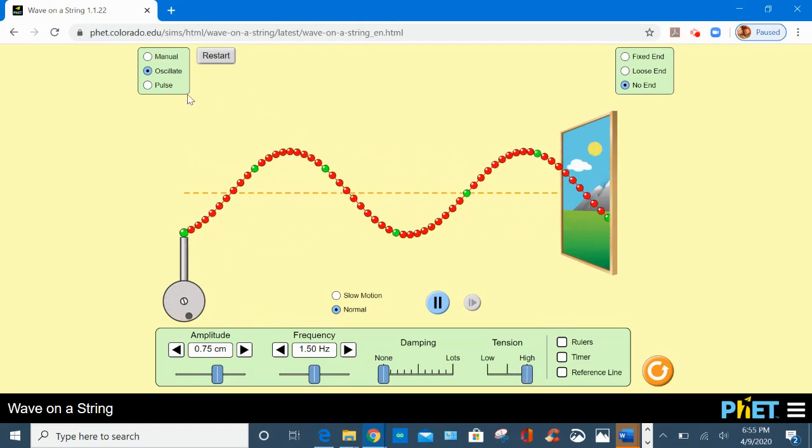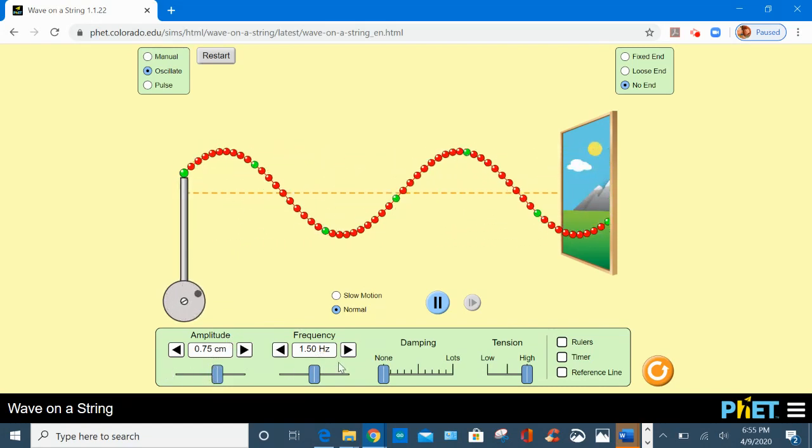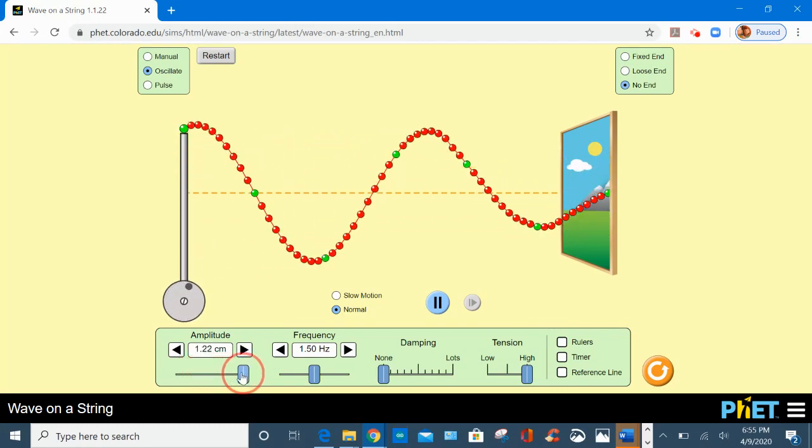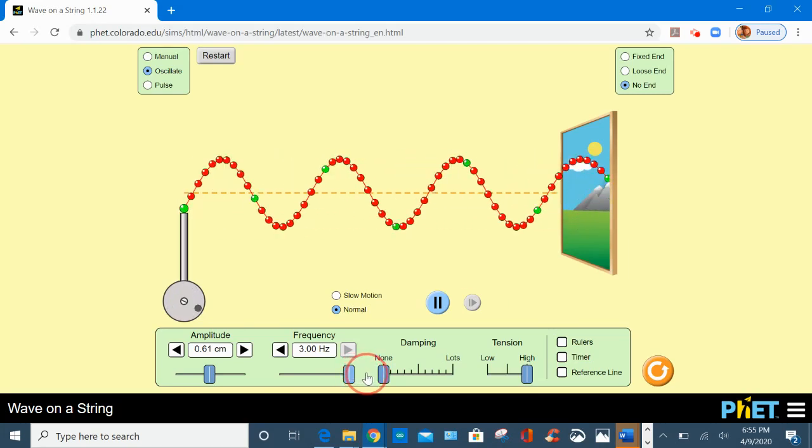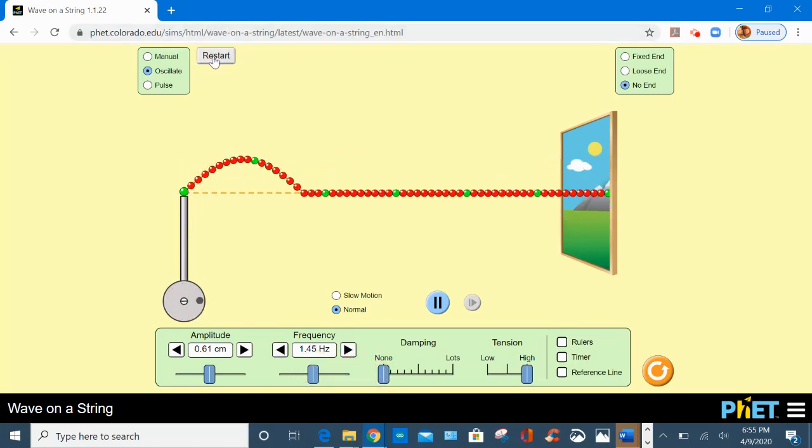Now the oscillate and pulse modes both have those options to control amplitude and frequency. You can control amplitude and also you can control frequency, make the wave go faster. Let's reset.